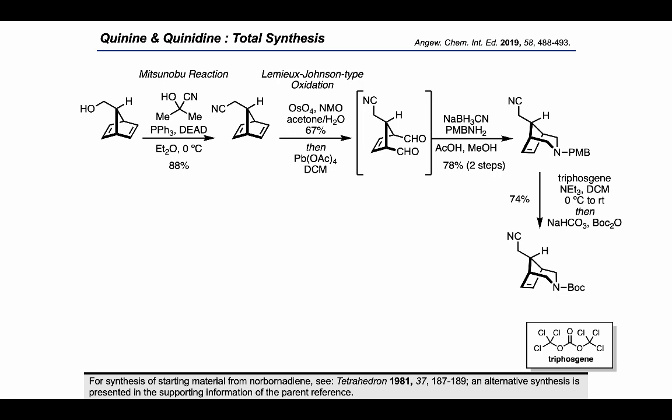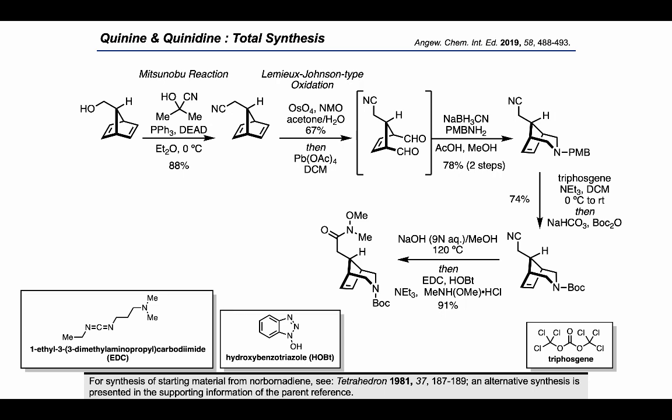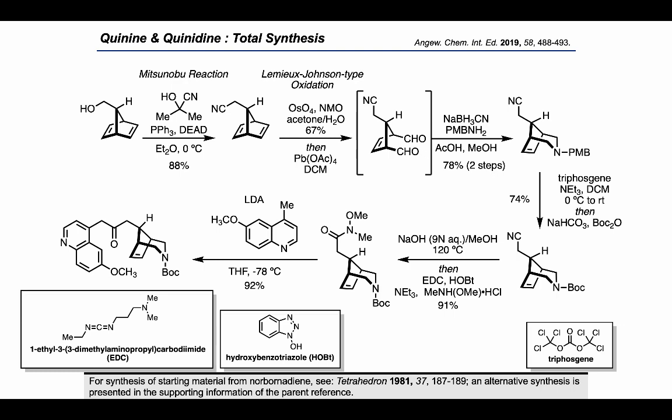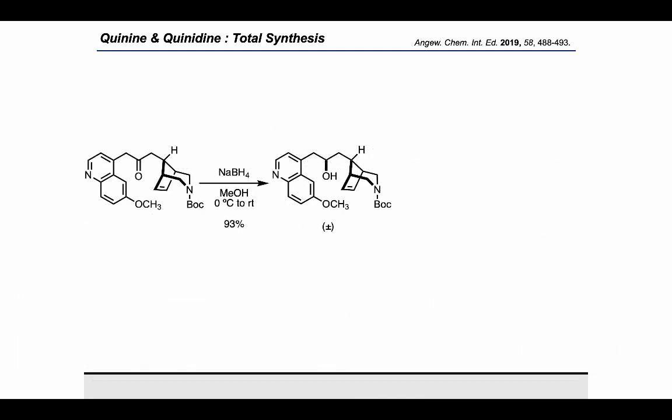The amine protecting group was then changed from PMB to Boc by treatment with triphosgene and triethylamine, followed by bicarbonate and Boc2O. In order to introduce the methoxyquinoline fragment, they hydrolyzed the nitrile to the carboxylic acid and carried out an EDC coupling to form the Weinreb amide. Then lithiation of a methoxyquinoline pronucleophile allowed acyl substitution on the Weinreb amide to form the ketone product.